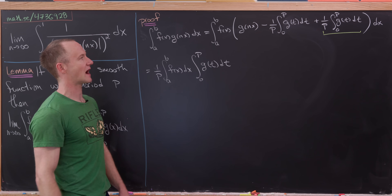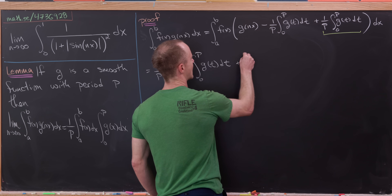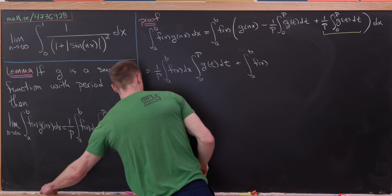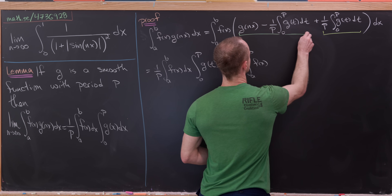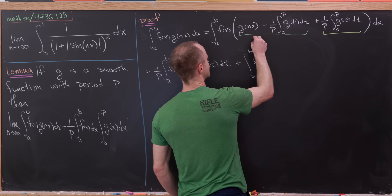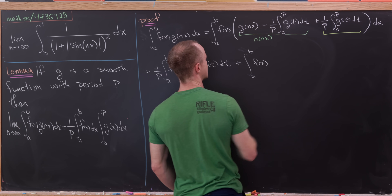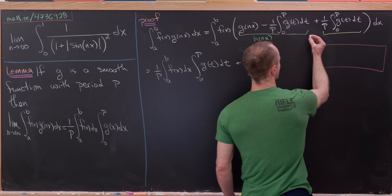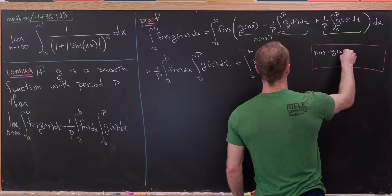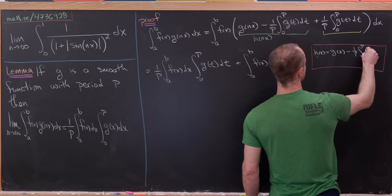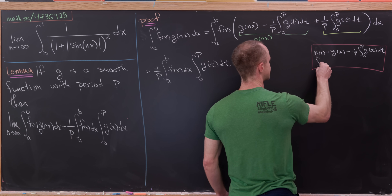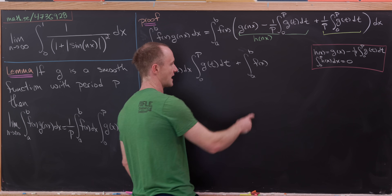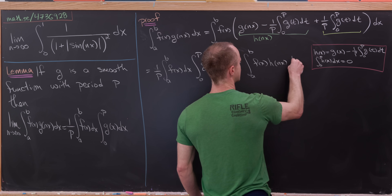Now I've got to handle what's left. That will be the integral from a to b of f of x times a new function — let's call it h evaluated at n times x. So h of x equals g of x minus 1 over p times the integral from 0 to p of g of t dt. Under this setup, if we take the integral from 0 to p of h of x dx we simply get 0.